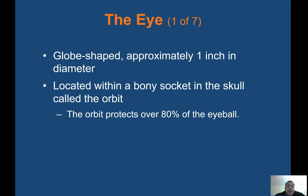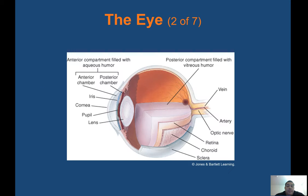The eye is globe-shaped, approximately one inch in diameter, located within a bony socket in the skull called the orbit. The orbit protects over 80% of the eyeball. The eyeball has anterior and posterior chambers. The anterior chamber is filled with aqueous humor — remember A and A — and the posterior compartment is filled with vitreous humor.